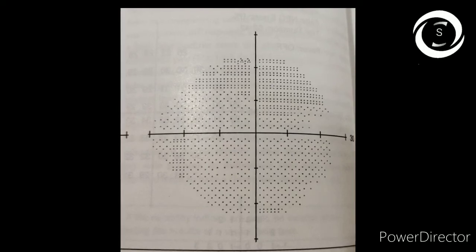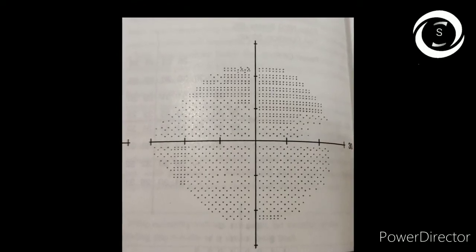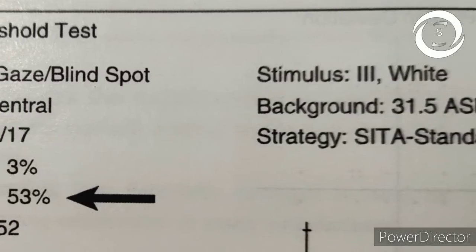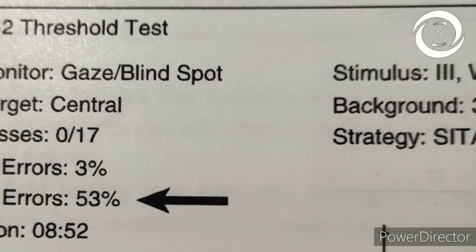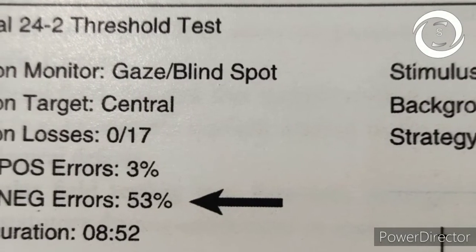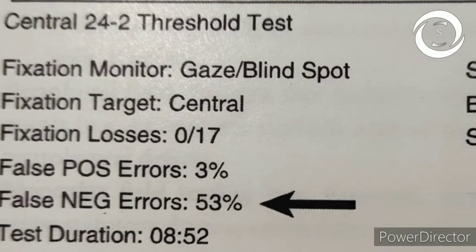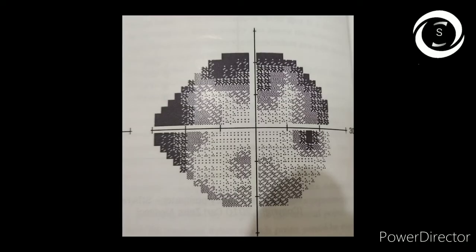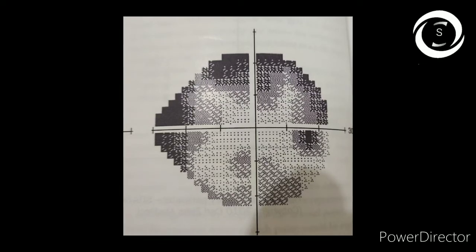In high false positive errors, it should be less than 33 percent. Then usually in a full threshold test, early in the test you perceive the stimulus and later missed at same position with same intensity. That shows fatigability or tiredness or inattention. False negative is recorded, should be less than 33 percent. Clover leaf pattern is appeared on grayscale as you can see in high false negative errors.